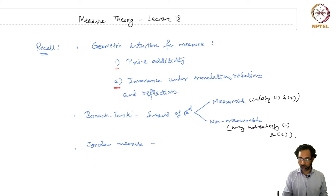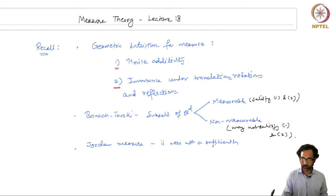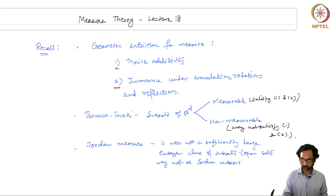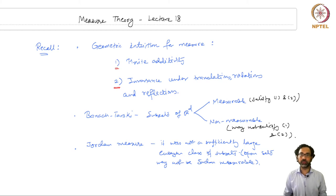The drawback for the Jordan measure and Jordan measurable subsets was that it was not a sufficiently large enough class of subsets. In particular, open sets may not be Jordan measurable. Since we wanted to have a connection with the underlying topology of the Euclidean space R^d, we wanted at least the open subsets of R^d to be measurable in a suitable notion of measure.